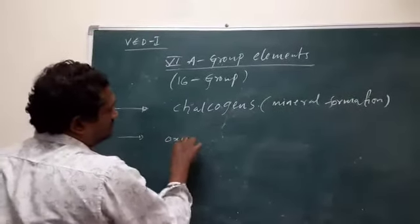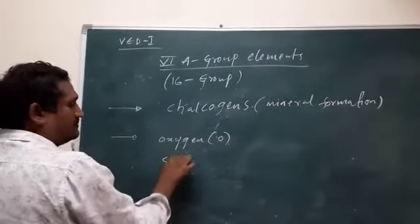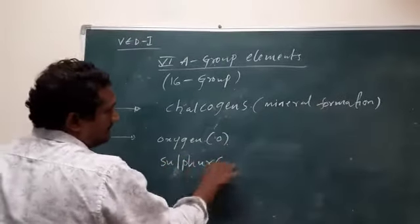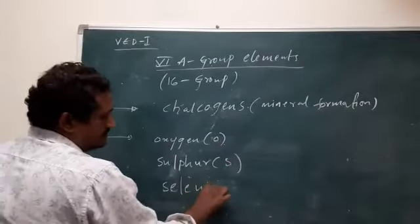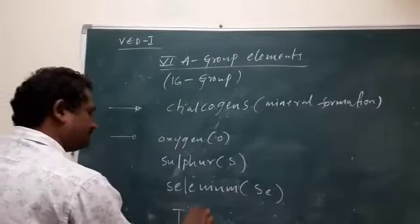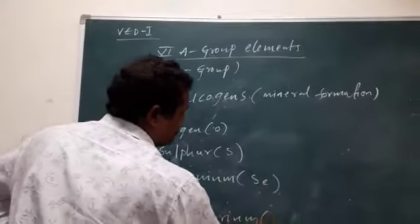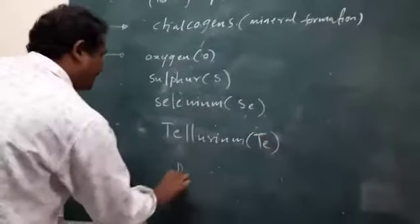In this group of the elements: Oxygen, Sulfur, Selenium, Tellurium, and Polonium. These are the elements present in this 68 group.